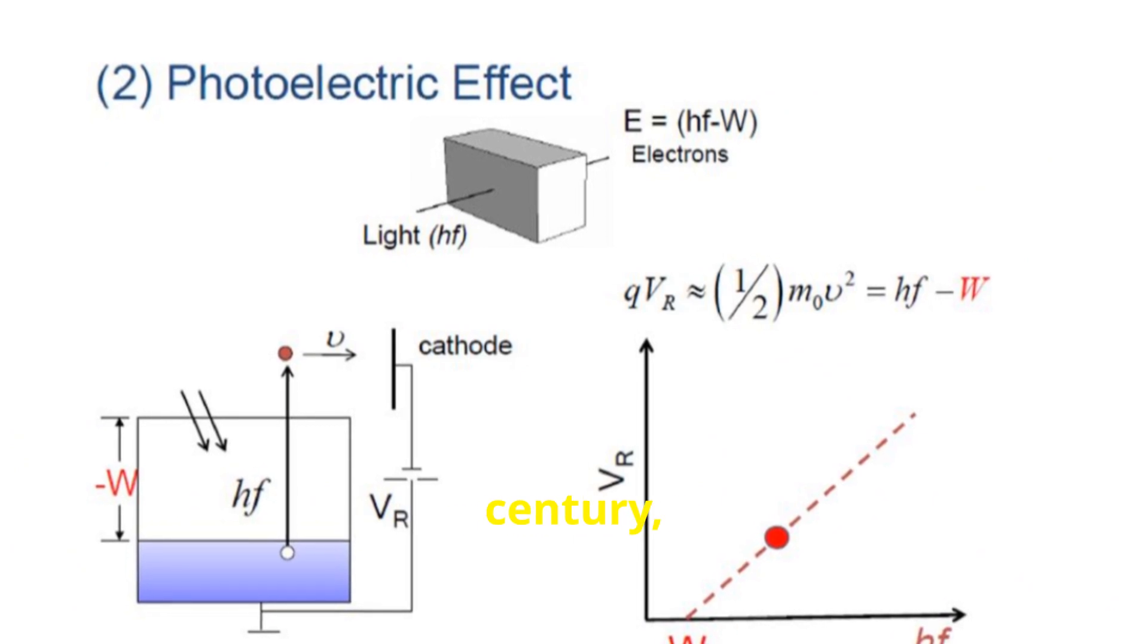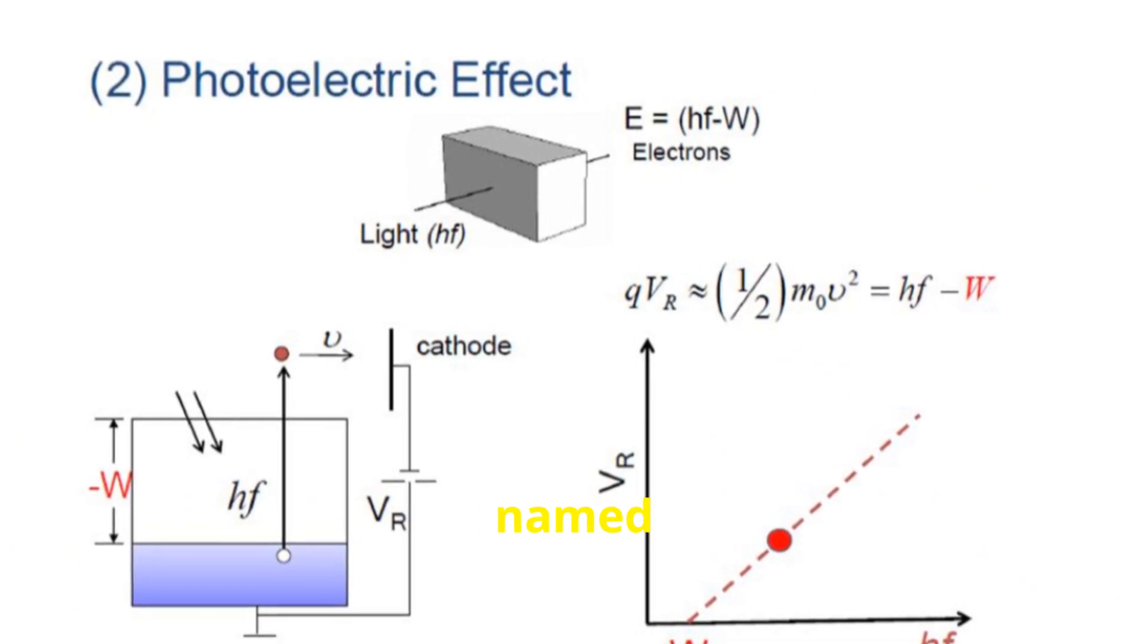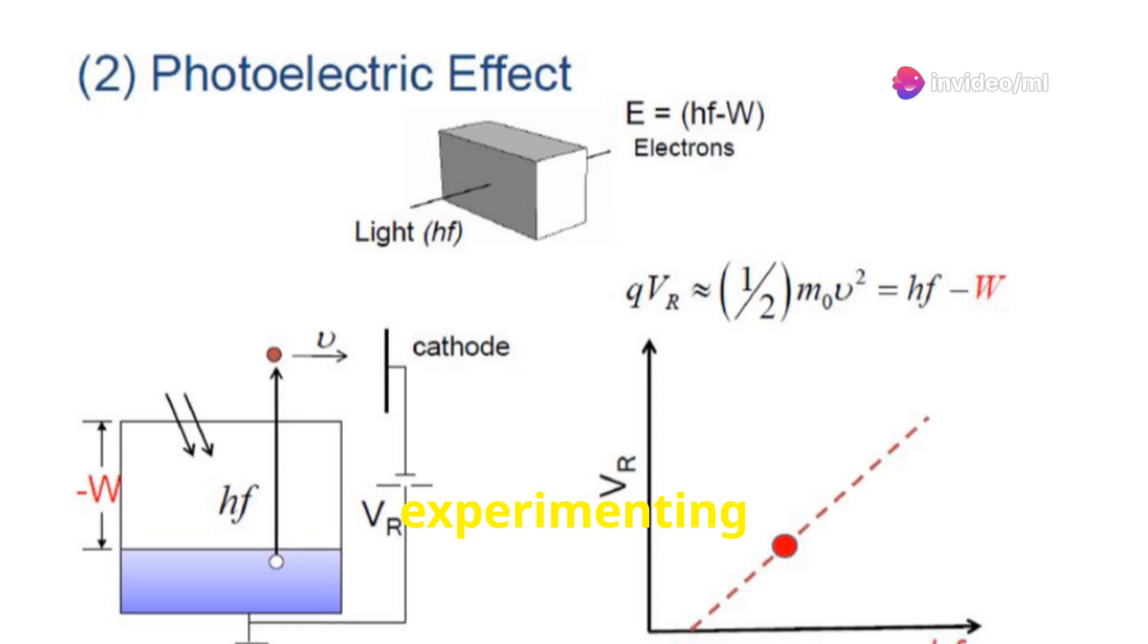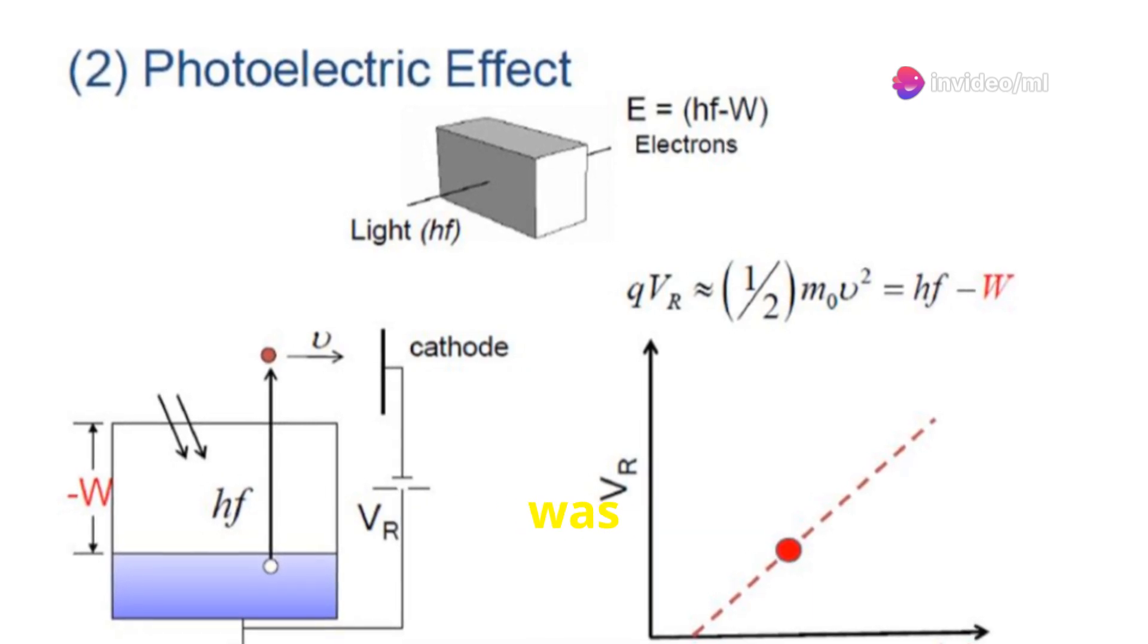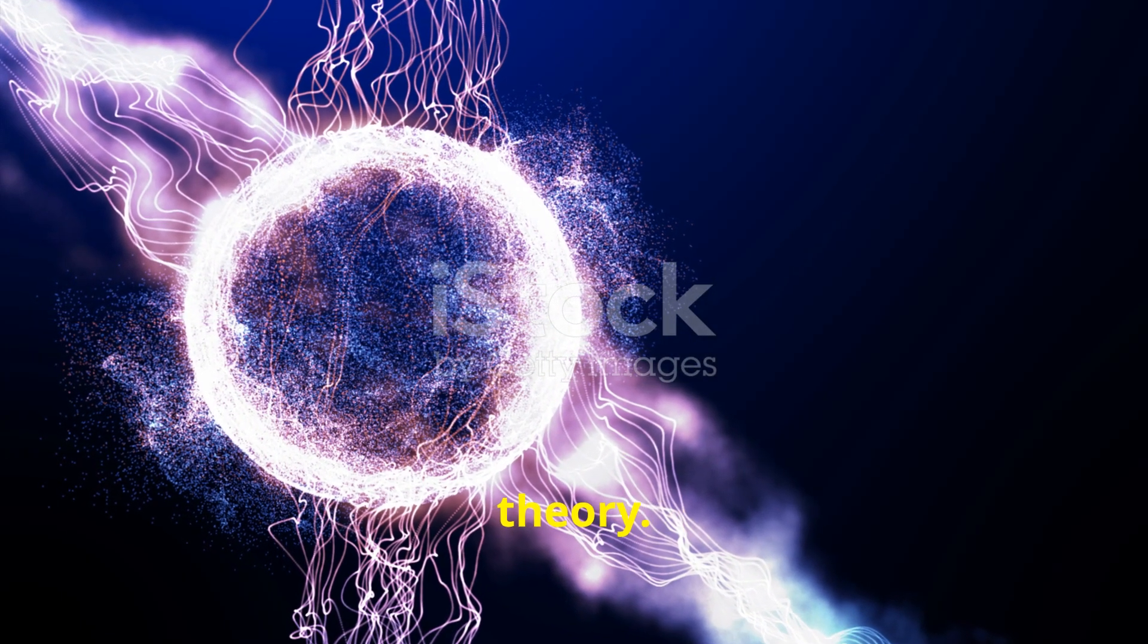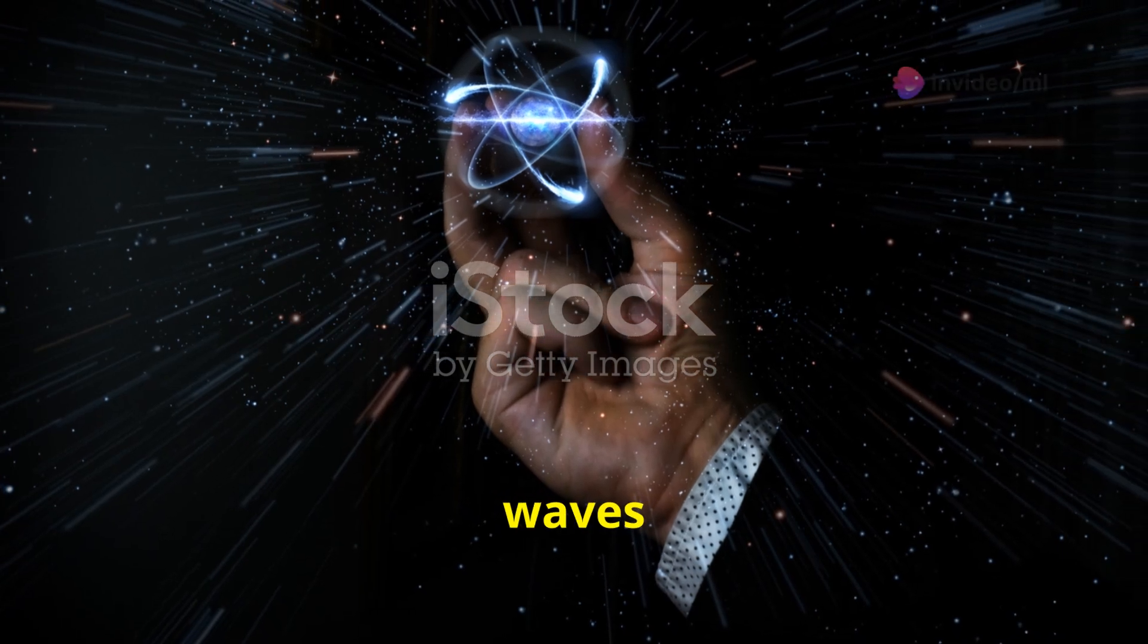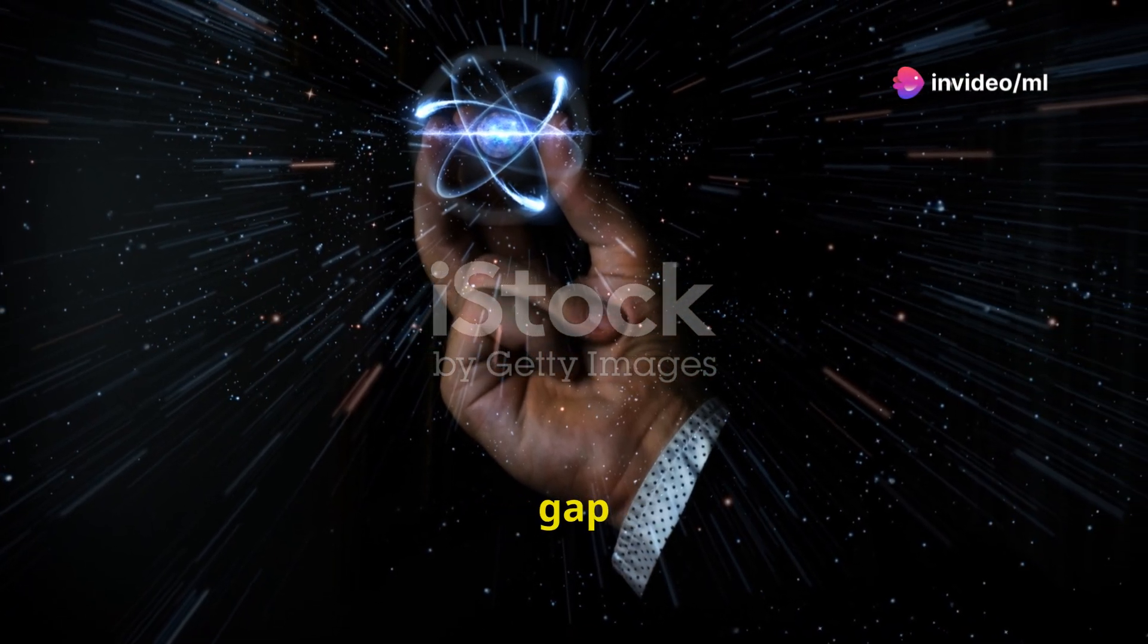In the late 19th century, a German physicist named Heinrich Hertz stumbled upon a curious phenomenon while experimenting with radio waves. Hertz was trying to prove the existence of electromagnetic waves as predicted by James Clerk Maxwell's theory. He used a spark-gap generator to produce these waves and a receiver with a similar gap to detect them.